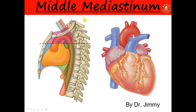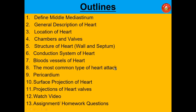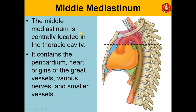Today our topic is the middle mediastinum. In the previous portion we talked about the mediastinum as the cavity in the thoracic cavity between the two pleura. The remaining space after placing the two pleura we call the mediastinum. Today we are going to talk about the middle mediastinum. The middle mediastinum is centrally located in the thoracic cavity and contains the pericardium, heart, and origins of the great vessels.